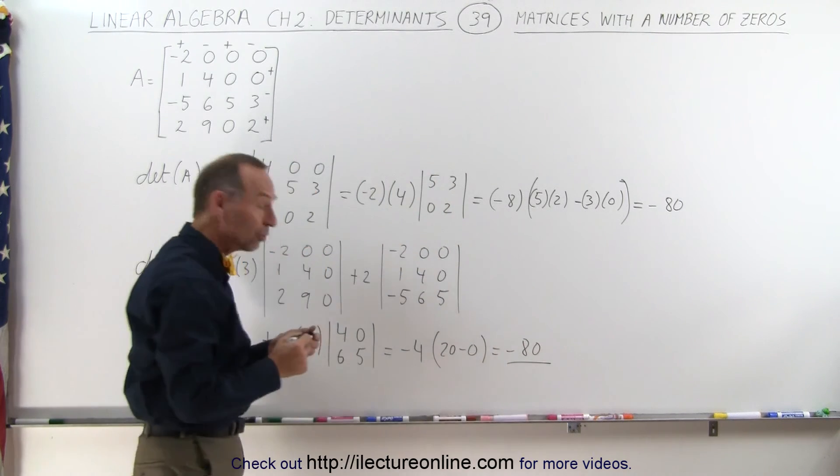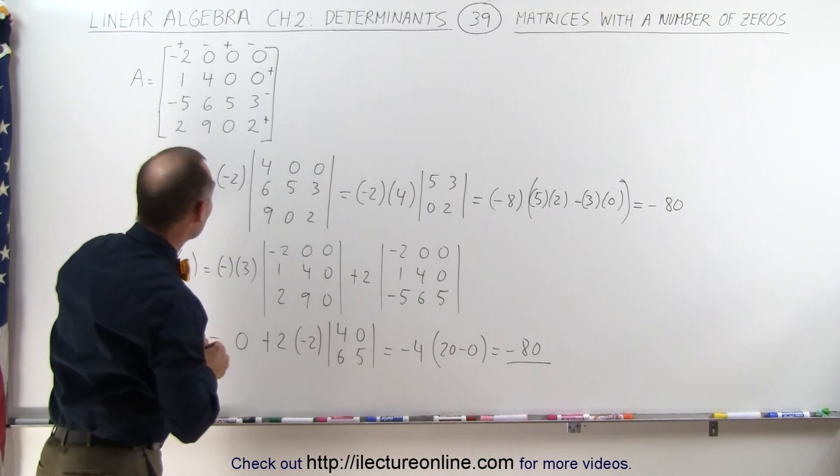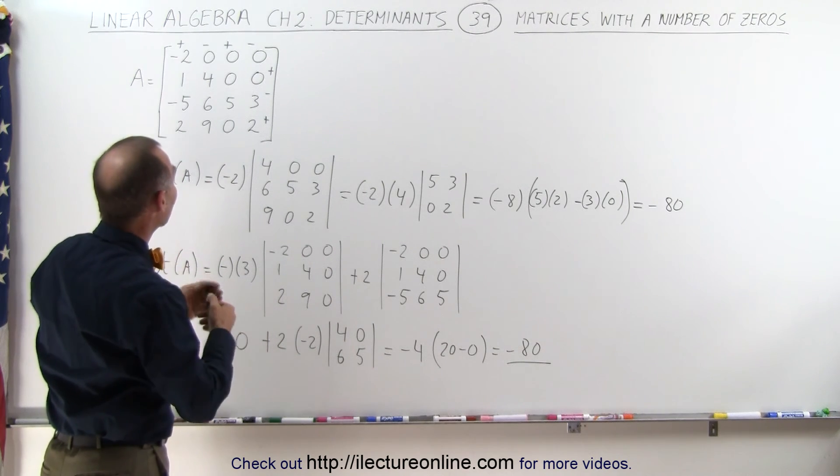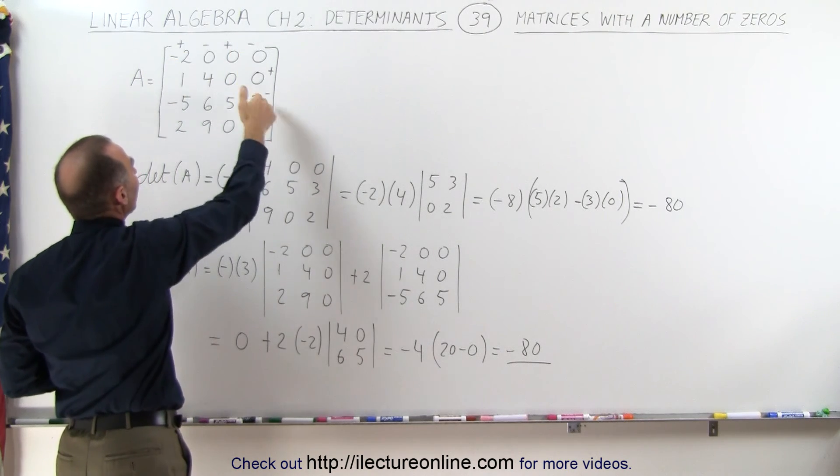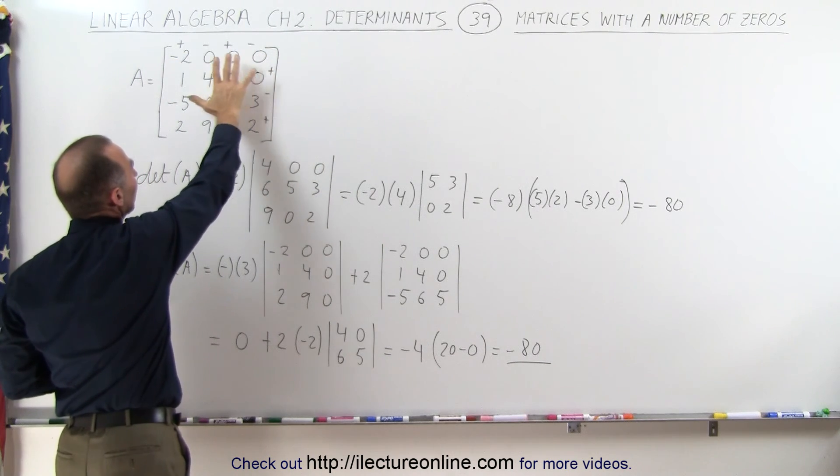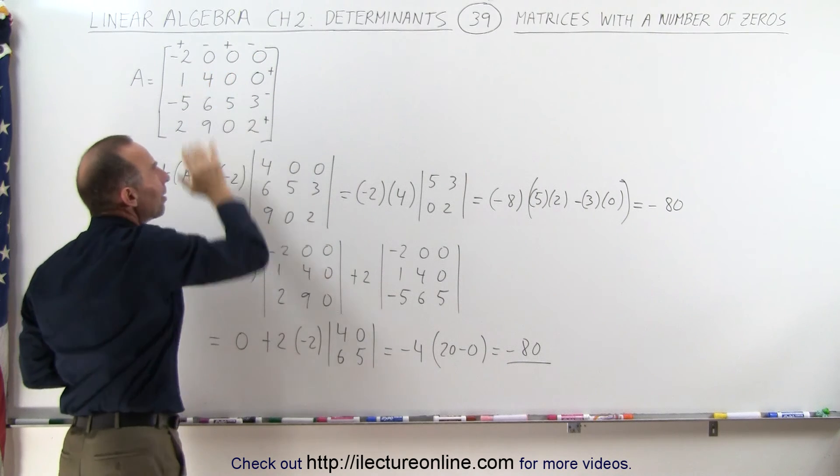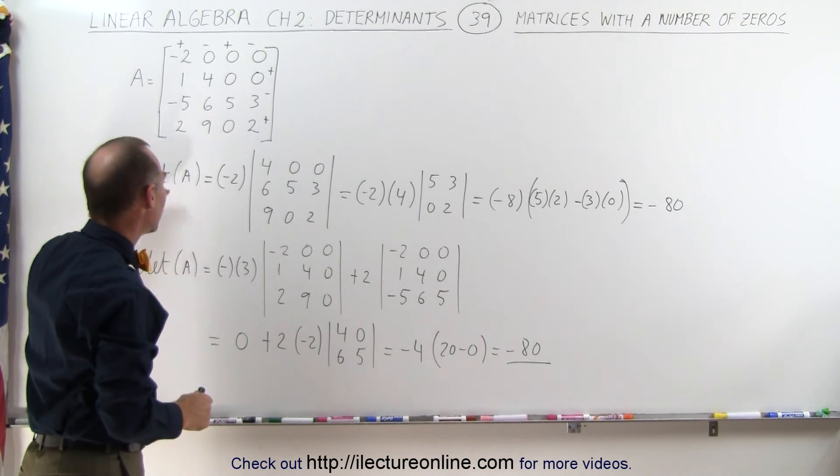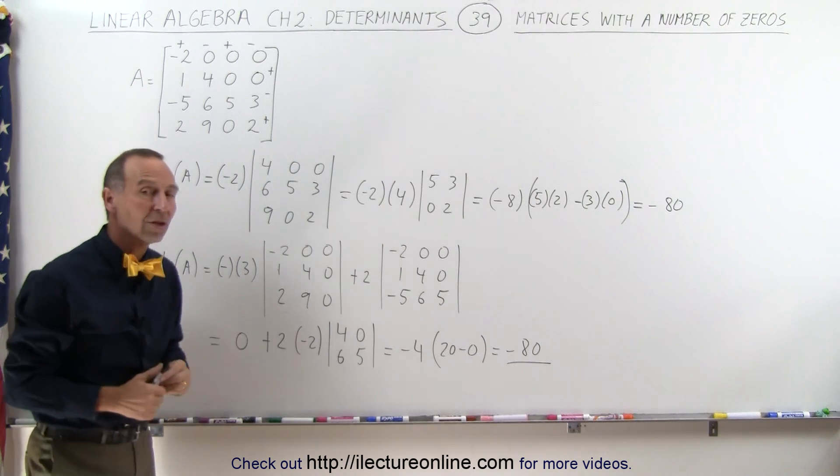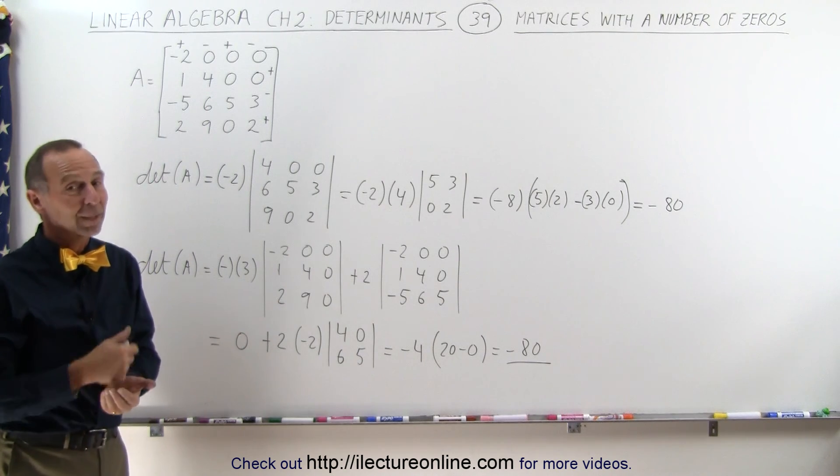So you can see that no matter which way you attack this matrix, you can find the determinant fairly easily by looking for a row or a column that has a lot of zeros in it, so that you can ignore many of the minor portions of the matrix. So you can see that here's two ways in which you can get the very same result, the determinant of A, and that's how it's done.